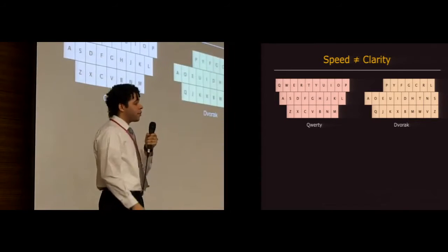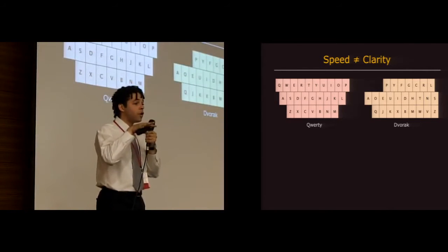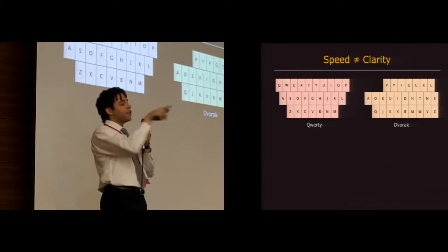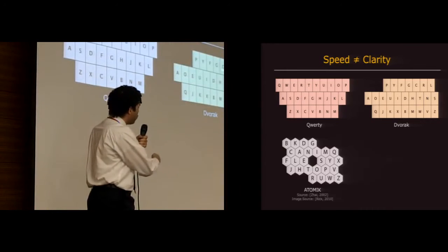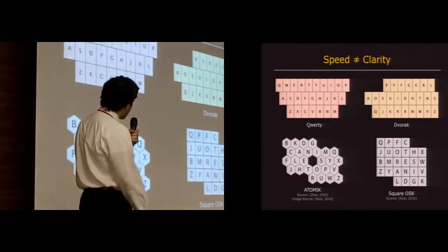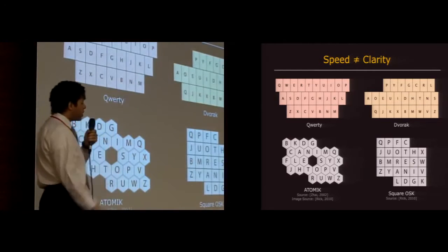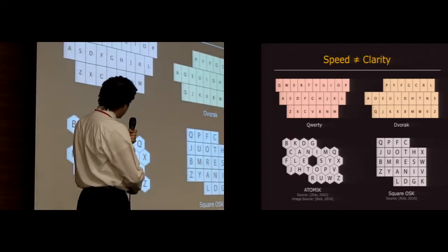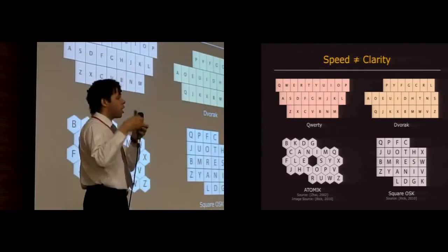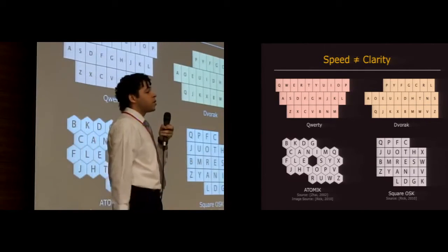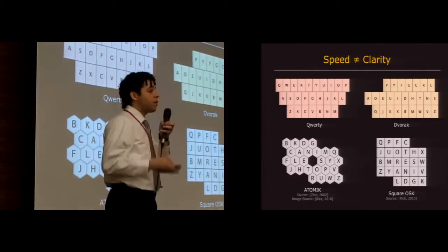Dvorak takes this a step further by placing common letters on the home row, but now gestures are basically horizontal line segments on the home row. And then layouts such as atomic and square optimized stroke keyboard, those were optimized for touchscreen typing. But if you look at them, you'll see that they basically cluster common letters together in the middle. And so word gestures are sort of clumped together all in the middle there.